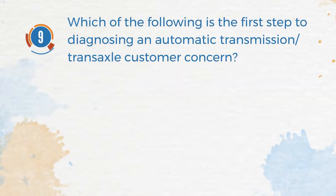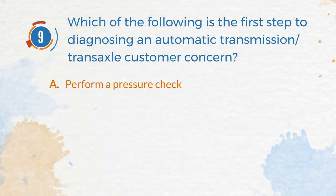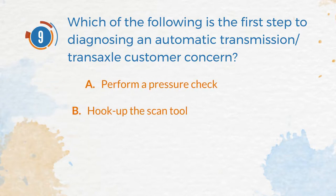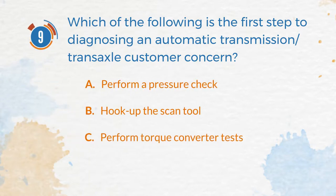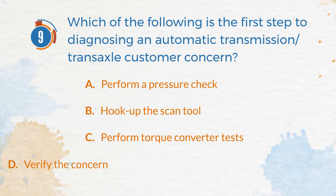Number 9. Which of the following is the first step to diagnosing an automatic transmission or transaxle customer concern? A. Perform a pressure check. B. Hook up the scan tool. C. Perform torque converter tests. D. Verify the concern.